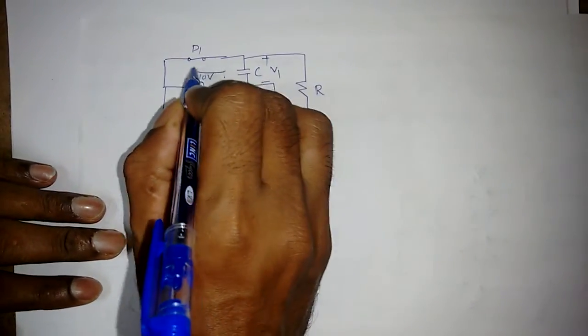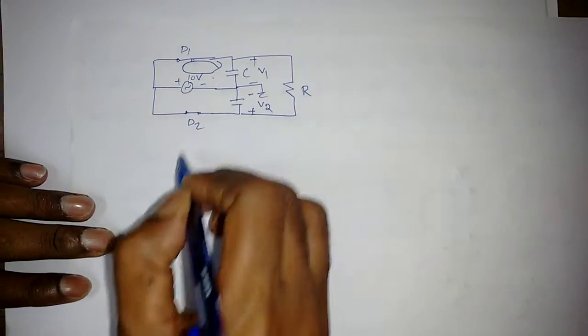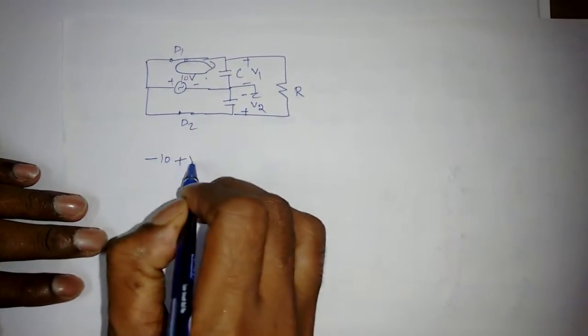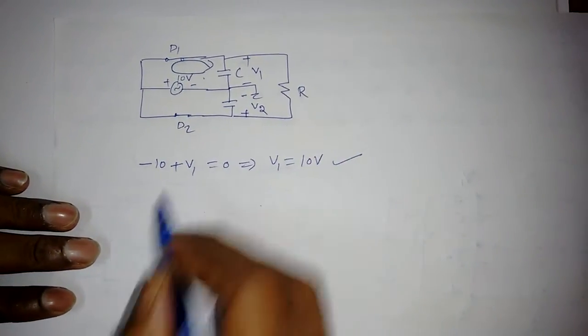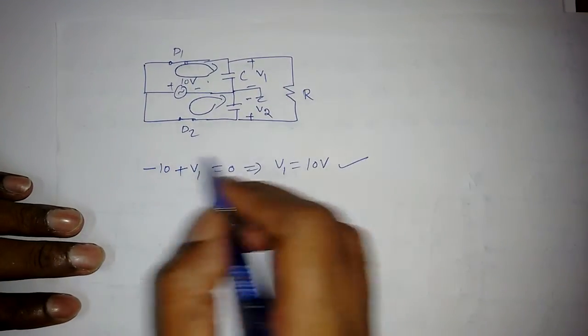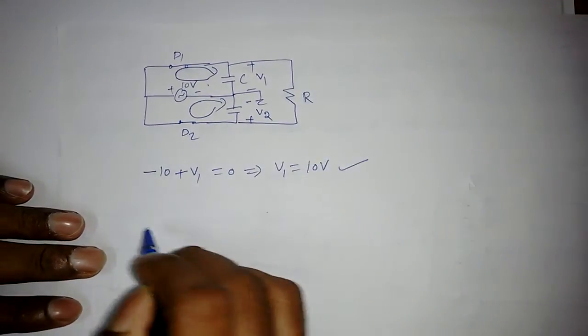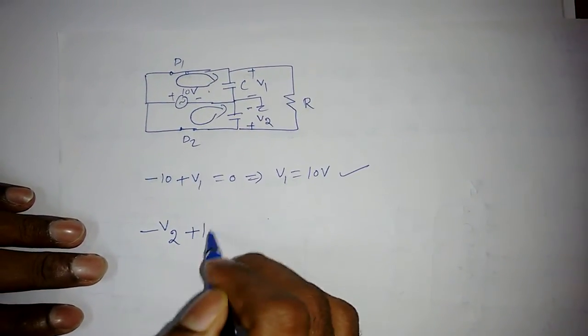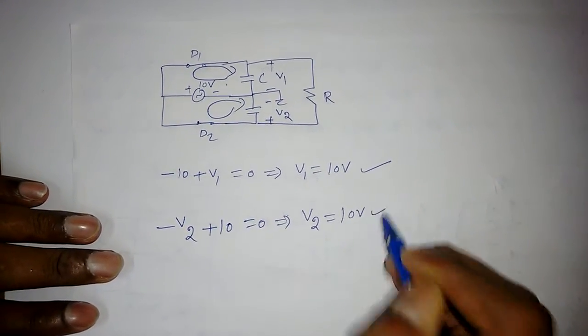Now it is very simple. If you apply KVL in the outer loop, minus 10 plus V1 is equal to 0. What is V1? It is 10V. Now if you apply KVL across this loop, minus V2 plus 10 is equal to 0. So what is V2? V2 is also 10V.